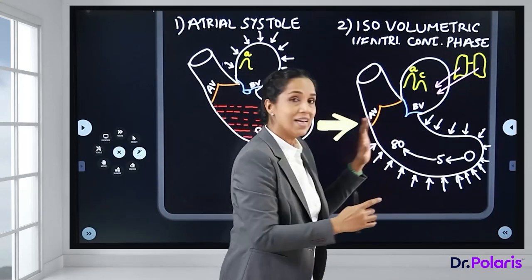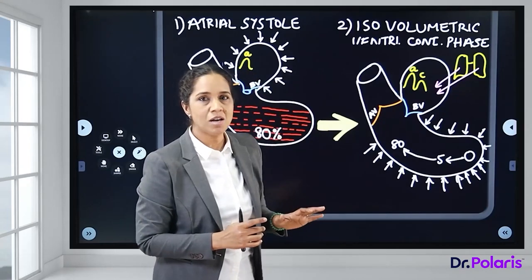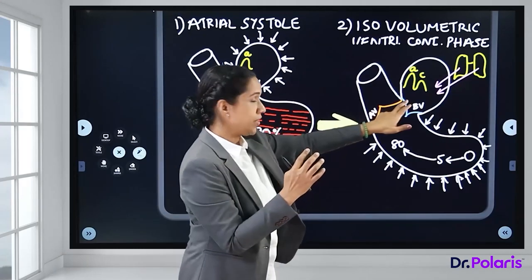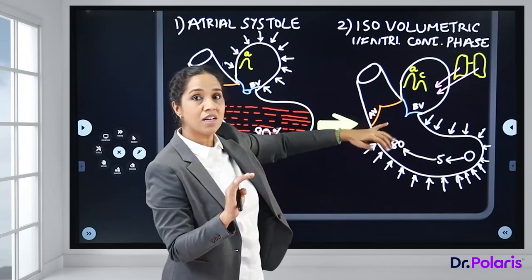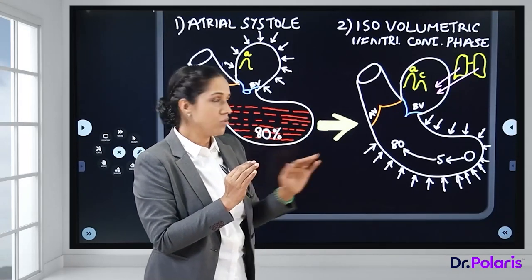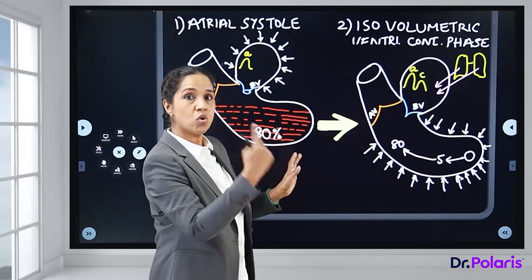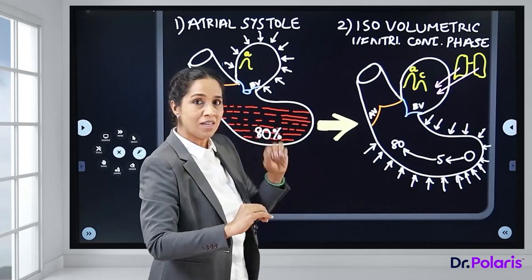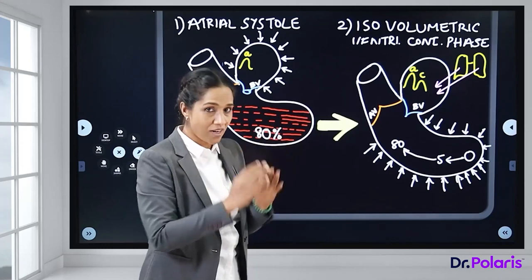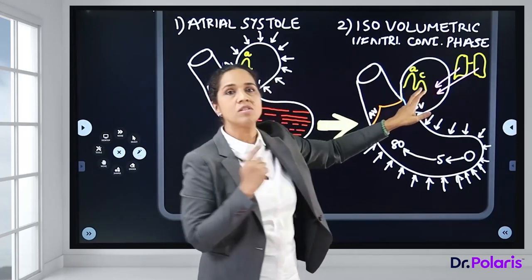The pressure inside the ventricle builds up — from 0 to 5, 10, 15, 20, 25... reaching about 80 mmHg by the end of the isovolumetric contraction phase. Nothing enters or leaves the ventricle; only intraventricular pressure increases as it contracts as a closed chamber.